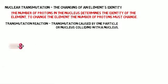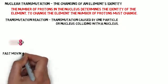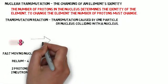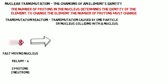What we're going to do is draw first a fast-moving nucleus, a helium nucleus. It's got two protons and two neutrons. We're going to allow this helium nucleus to collide with another nucleus.